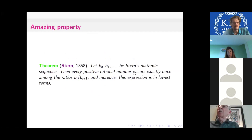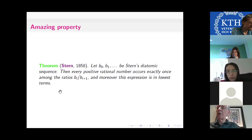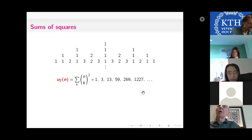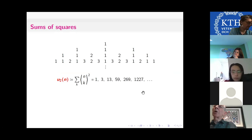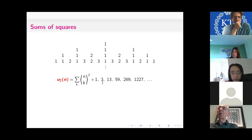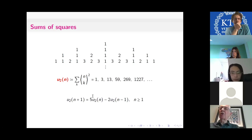The most amazing property of Stern's diatomic sequence is that every positive rational number occurs exactly once among the ratios b_i over b_{i+1}. And they appear in lowest terms. Pretty surprising. Let's look at some properties of Stern's triangle. In analogy to Pascal's triangle, we could ask what are the sum of the squares of the entries in each row? For Pascal's triangle, it's 2n choose n. I'll call this u_{2,n}. Or more generally, u_{r,n} would be the sum of the rth powers. We get the sequence 1, 3, 13, 59, etc. You can look it up in the OEIS or figure it out otherwise that it satisfies this recurrence relation.